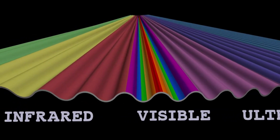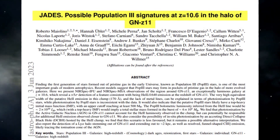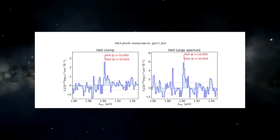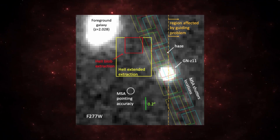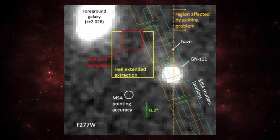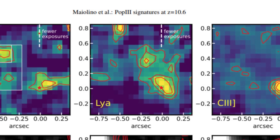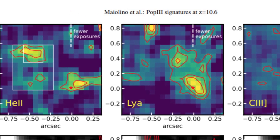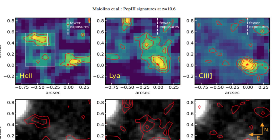Maiolino and collaborators have uncovered intriguing evidence pertaining to Population 3 stars. They detected a cluster of helium gas emitting light at a very distinct wavelength, indicative of intense ionization from a highly energetic source. Positioned near, but not within, the galaxy GNZ-11, this helium-laden gas forms what is known as a halo around the galaxy. While such gas halos are not uncommon, the unique aspect here is the absence of accompanying bright emissions from metal elements like carbon, typically associated with helium clumps. Upon examination of the data, carbon emissions present in the vicinity of GNZ-11 do not coincide with the region where the helium glow is observed.